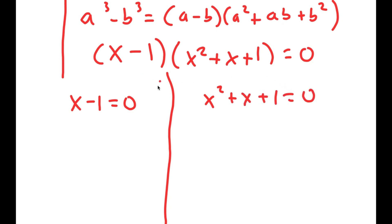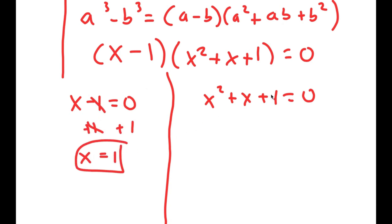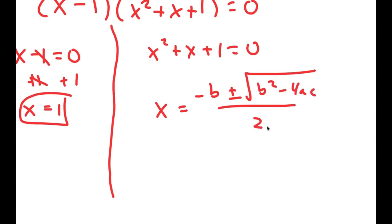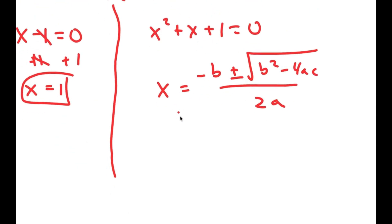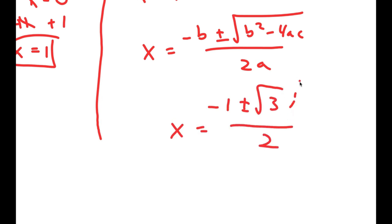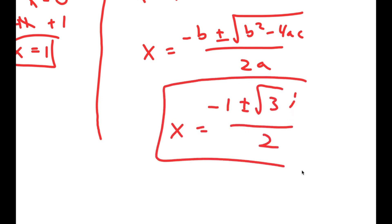For x minus 1 equals 0, all I have to do is add 1 on both sides and I get x is equal to 1. And for x squared plus x plus 1 equals 0, I can use the quadratic formula. By using it, I get x is equal to negative 1 plus or minus the square root of 3i over 2. So these are two more solutions.